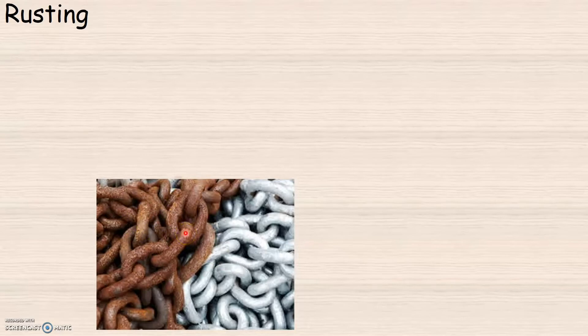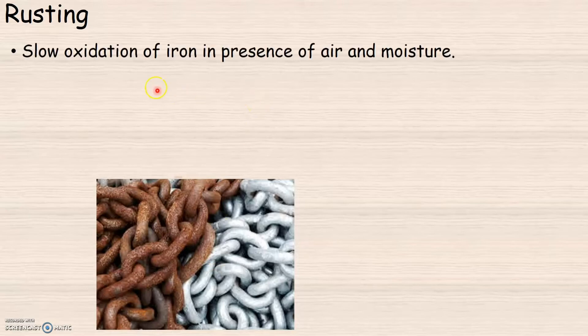We have already learned that rusting of iron is a chemical change, which means a chemical reaction is taking place. We also know that rusting of iron does not take place over a short period of time — it takes a long duration. So, rusting is the slow oxidation of iron in the presence of air and moisture.